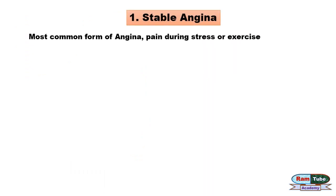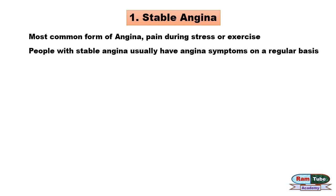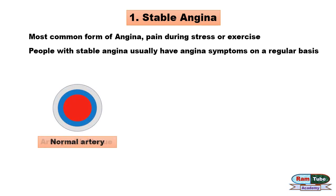Stable angina is the most common form of angina, in which there is pain during stress or exercise. People with stable angina usually have symptoms on a regular basis which last for about five minutes. The main cause is the formation of atherosclerotic plaque in the coronary artery, which blocks blood flow.